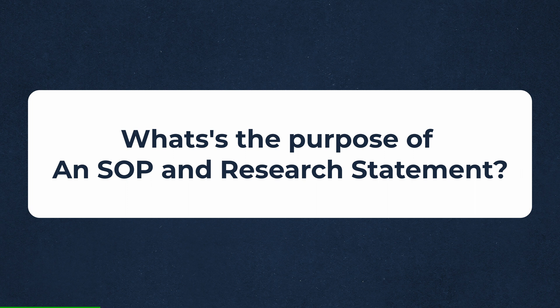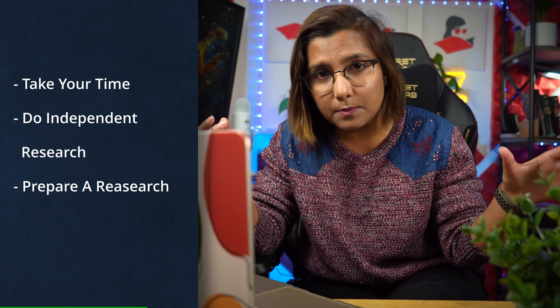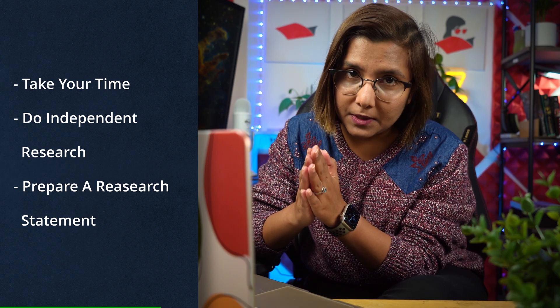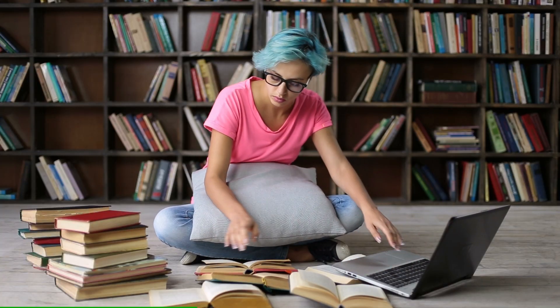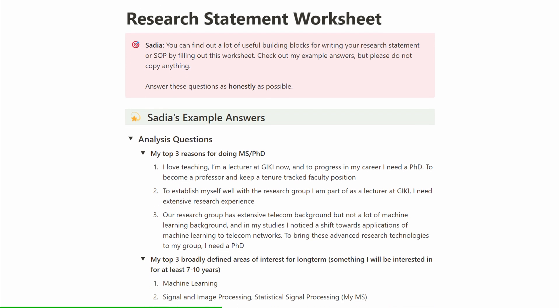What's the purpose of a research statement? It's basically the admissions committee asking you to show them what you will be doing for the next three to five years for MS or PhD positions. Take about a week, do independent research, and prepare a research statement to show what kind of research you can do. You'll need to conduct a literature review and do some brainstorming. The worksheet contains questions that help you gather building blocks — like Lego bricks — that you can later fit into your SOP and your research statement.